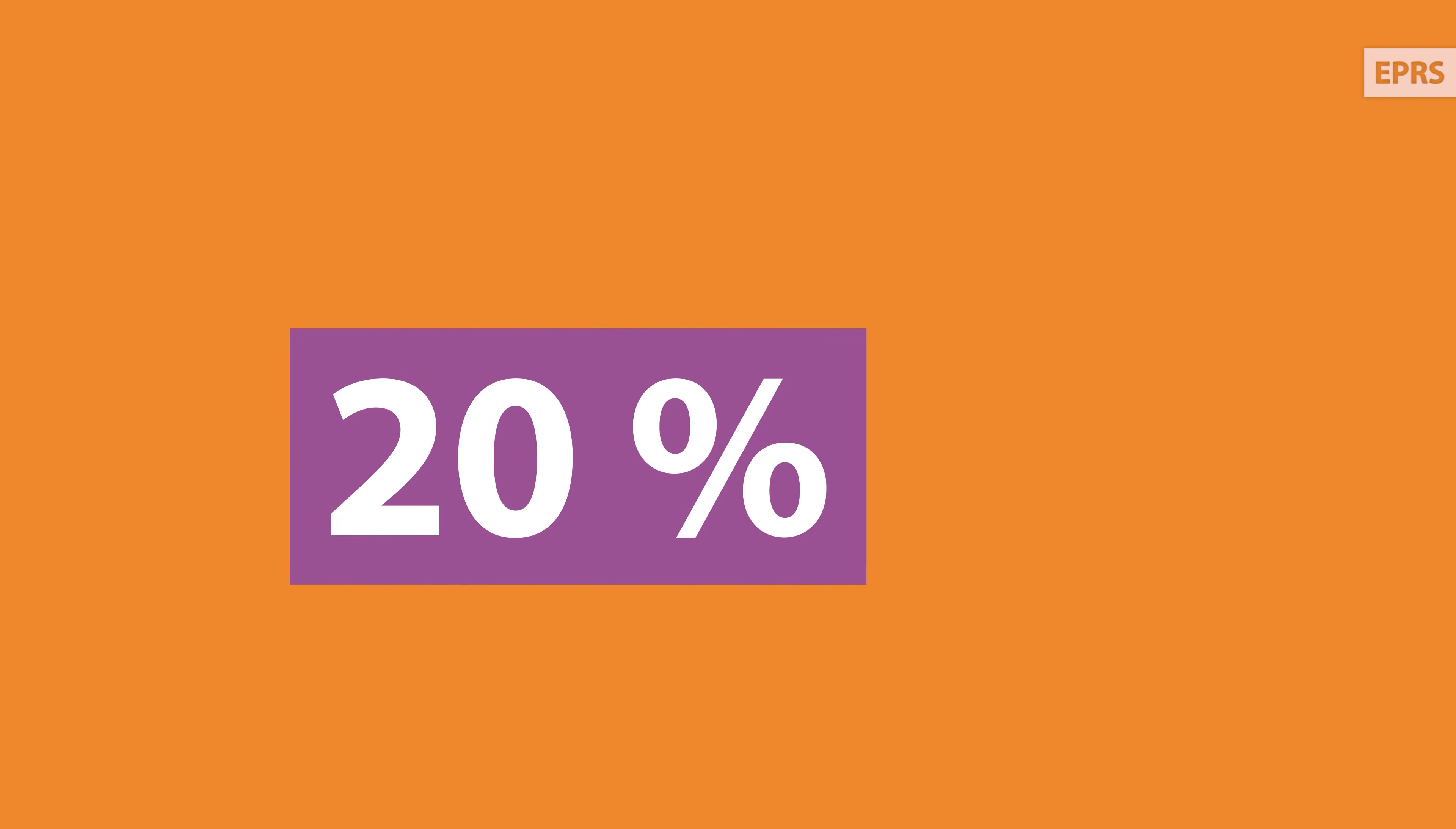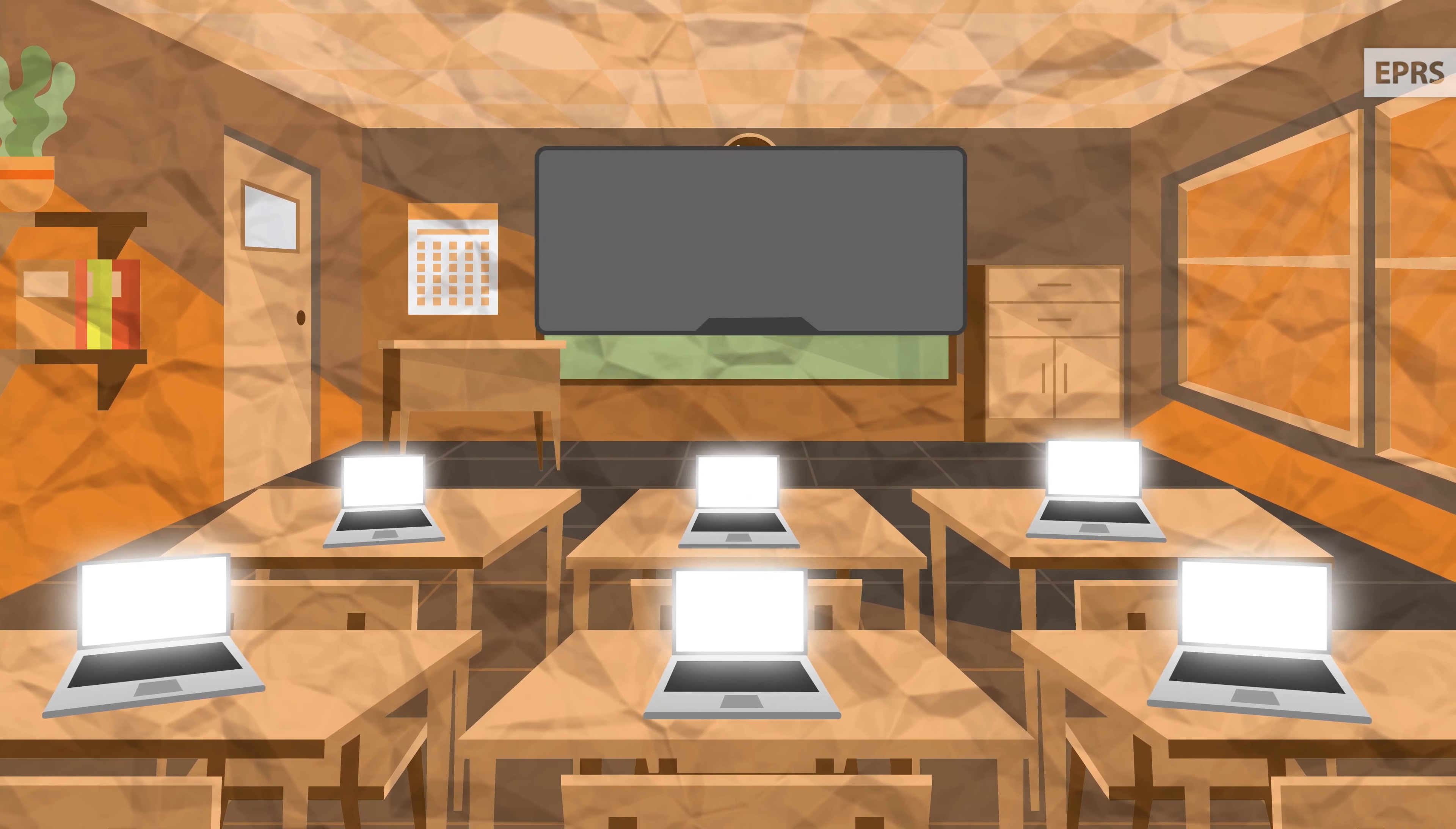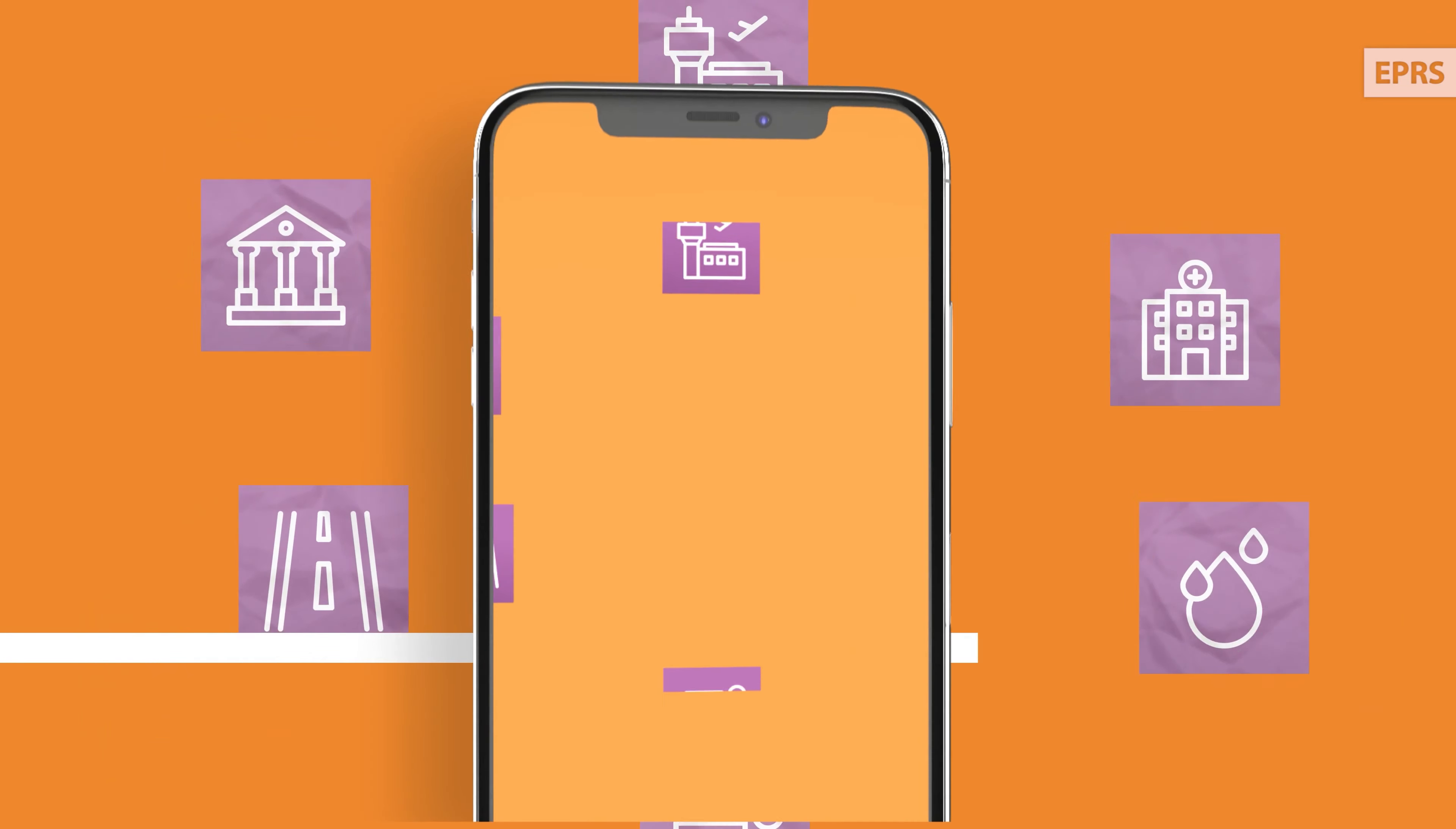Second, at least 20% of the investment should promote our digital transition. For instance, France will equip 45,000 classrooms with new digital solutions, while Croatia plans to create a one-stop shop for all public administration's online services.